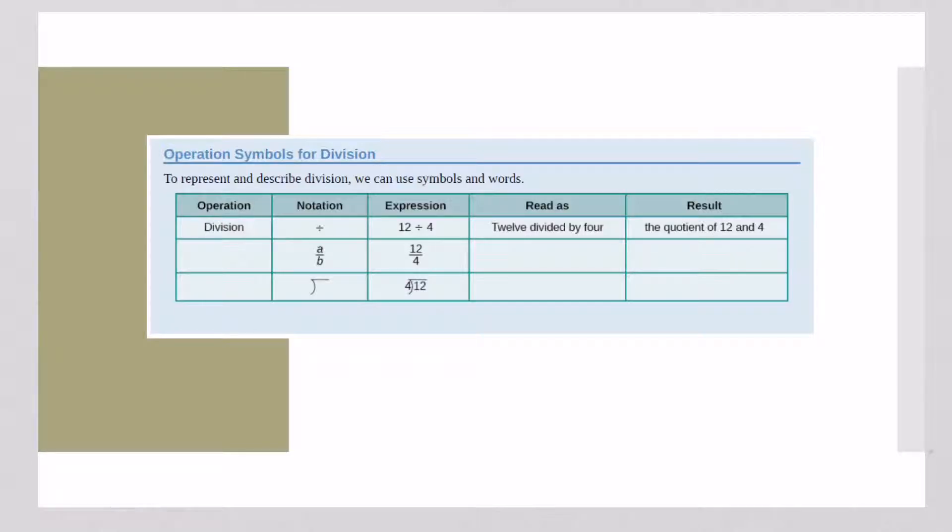My favorite way once we get up into the higher levels of math is going to be the fraction bar. Fraction bars mean division, so 12 divided by 4 can also be written as 12 over 4. So those are the same thing. They have the same meaning.